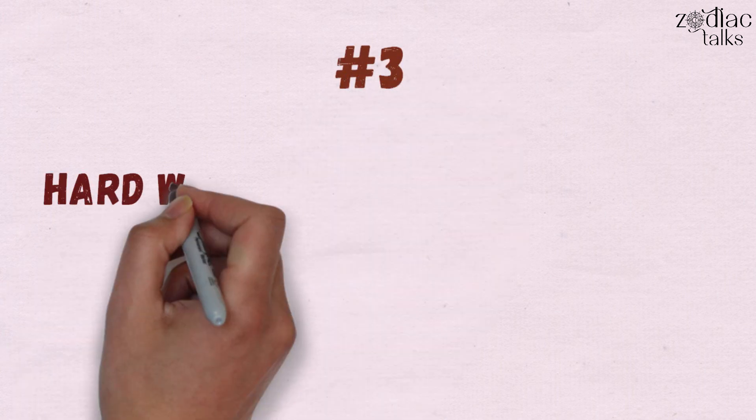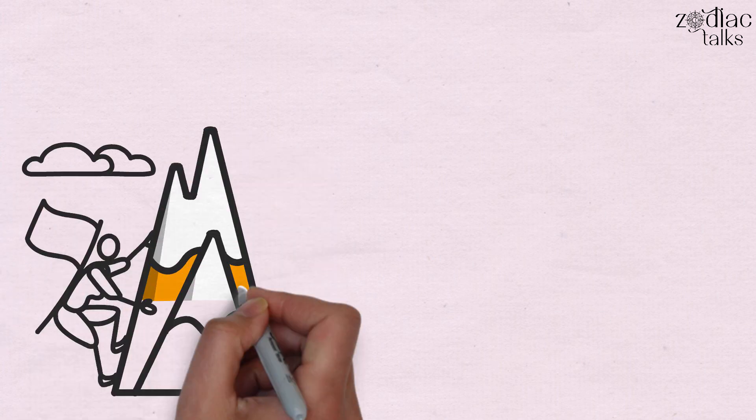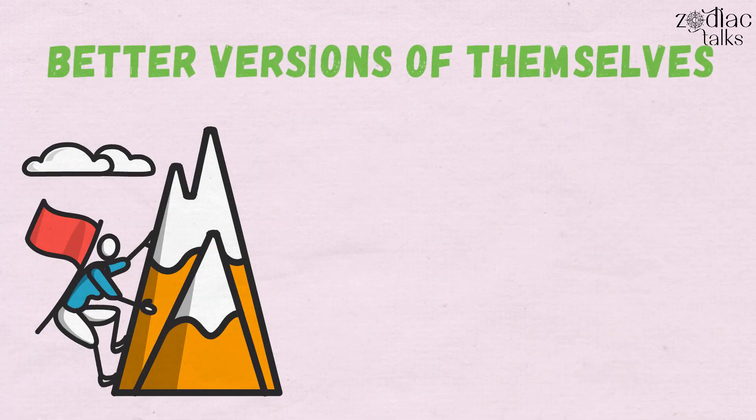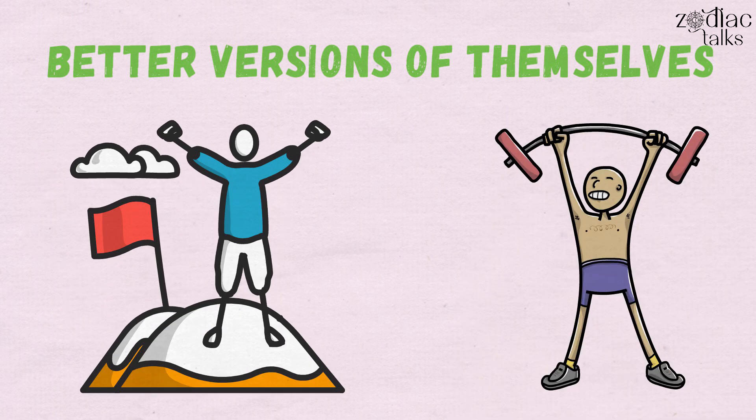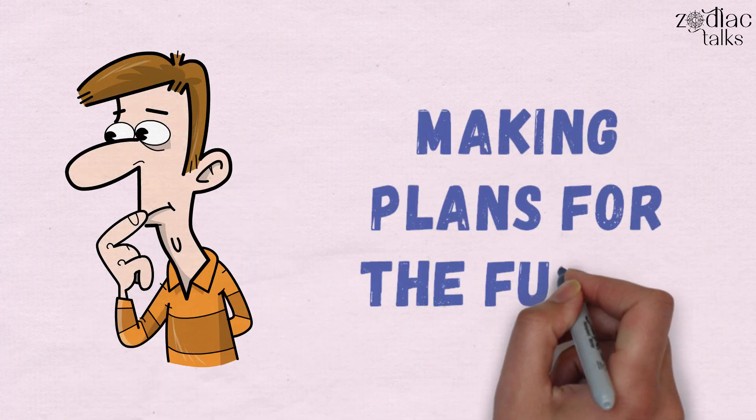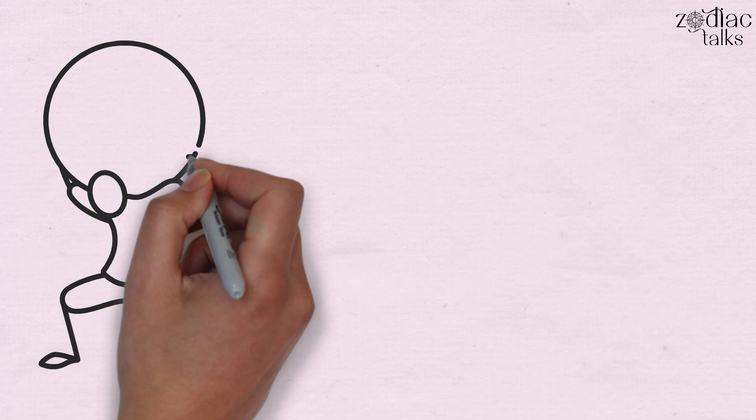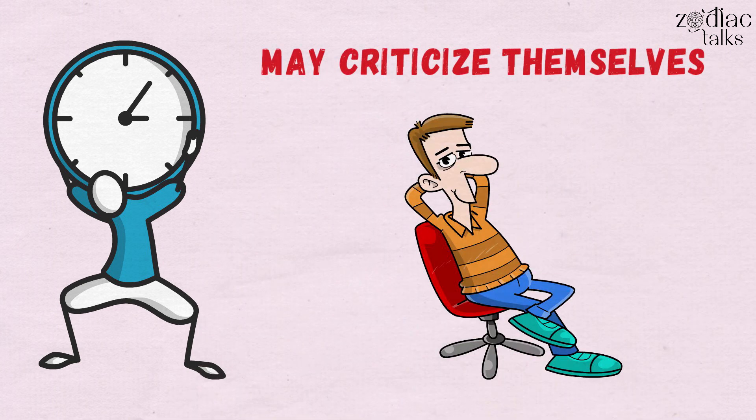3. They're Hard Workers But In A Low-Key Manner. They're constantly striving to be better versions of themselves and they're able to put in the necessary daily effort to achieve their objectives. They're also constantly thinking about the future and making plans for the future. They may, however, take on too much at times, or they may criticize themselves for not completing everything precisely enough.